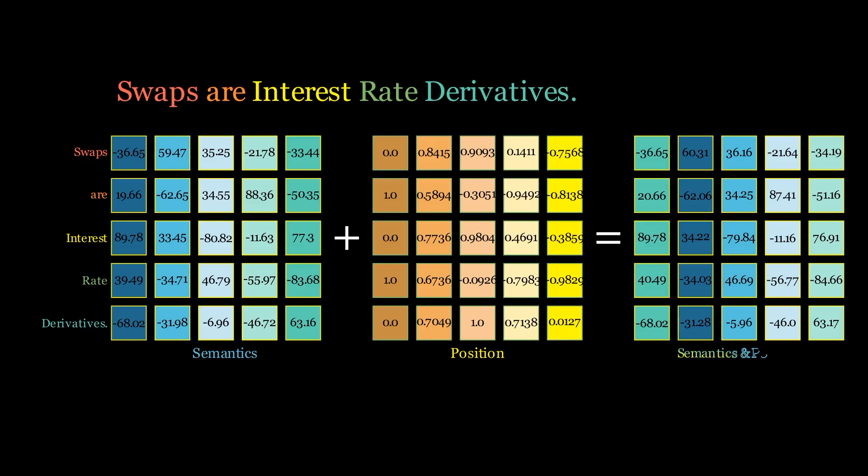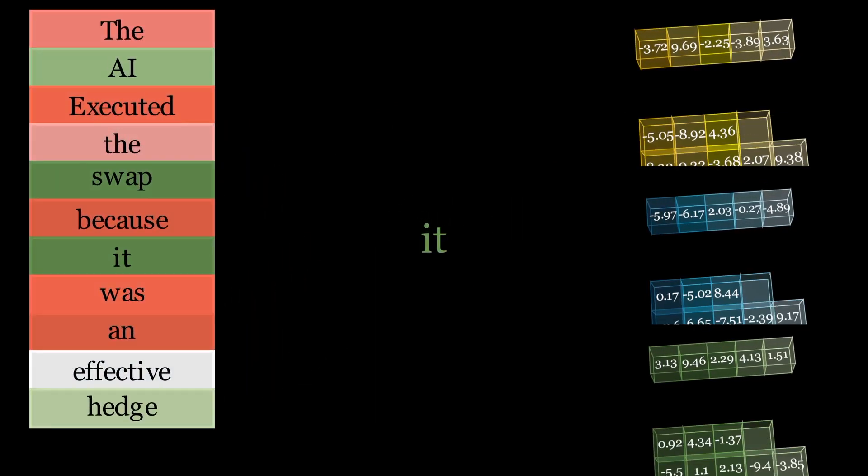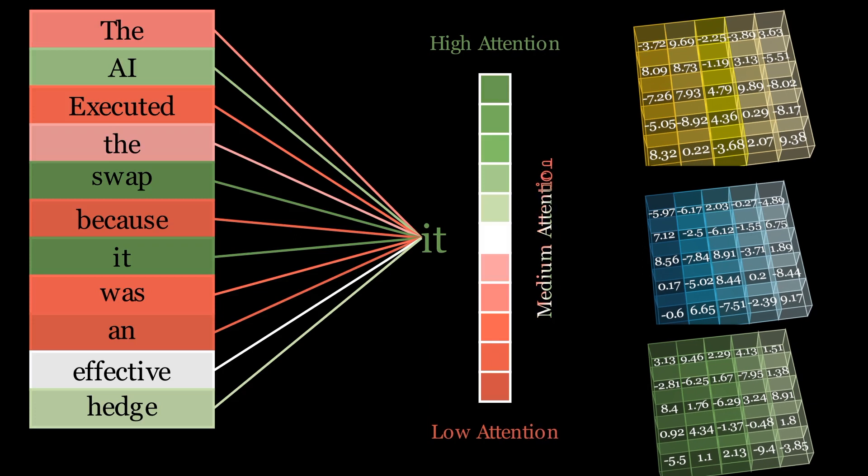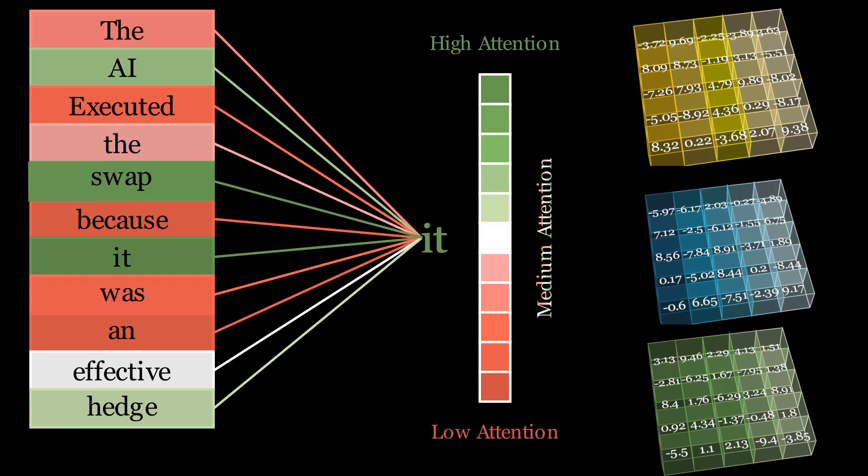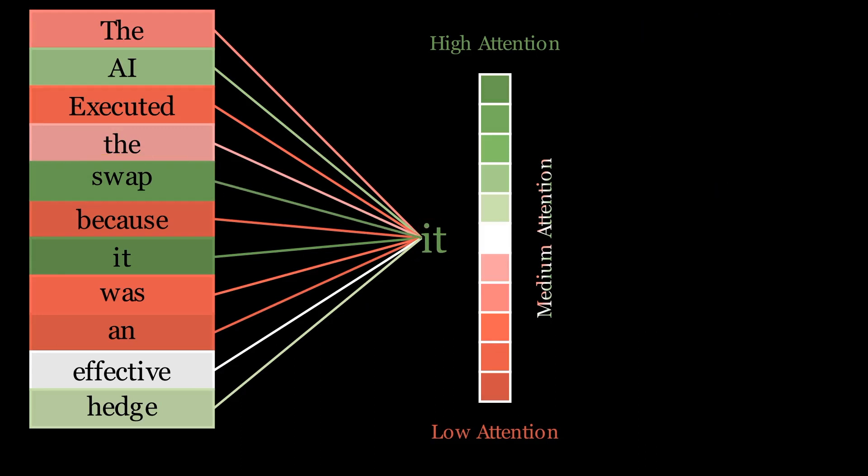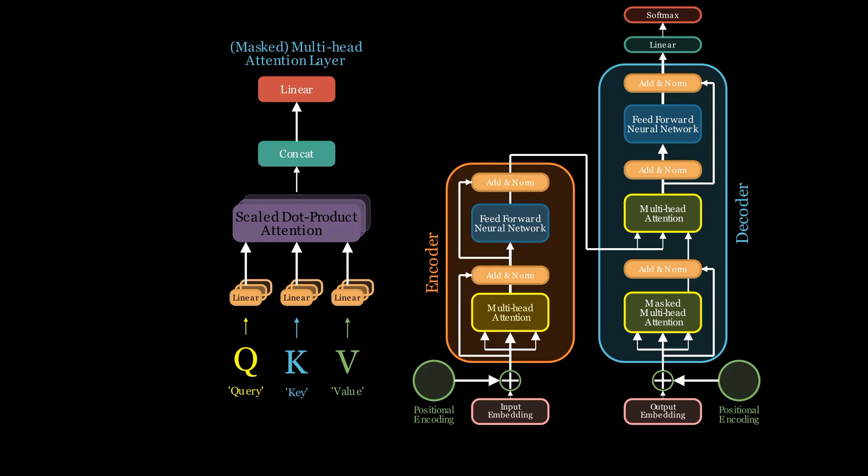Then the attention block will dynamically weight the importance of different elements in the sequence, determine which elements are most related to one another, and identify the relevant information for the transformation task it's been set. It does all this in the attention block. And the fourth video in this series covers attention.